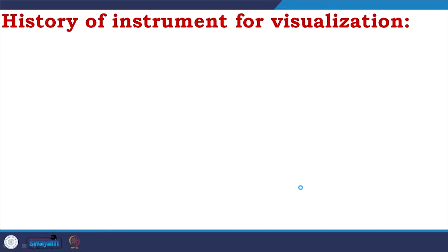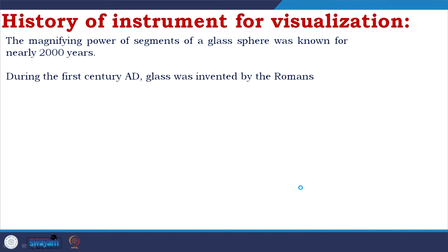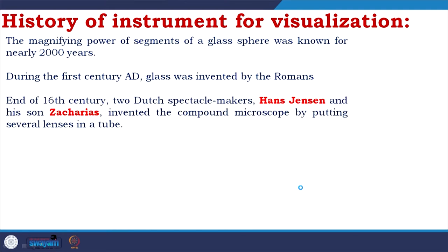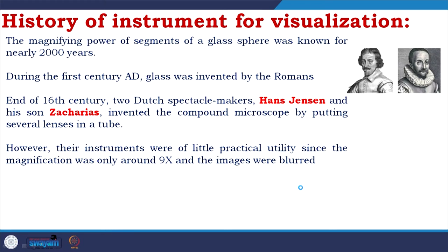Let us come to the history of instruments for visualization. The magnifying power of a segment of glass sphere was known for nearly 2000 years. During the first century AD, glass was invented by the Romans. At the end of the 16th century, two Dutch spectacle makers, Hans Jensen and his son Zacharias, invented the compound microscope by putting several lenses in a tube. However, their instrument was of little practical utility since the magnification was only around 9x and the images were blurred.